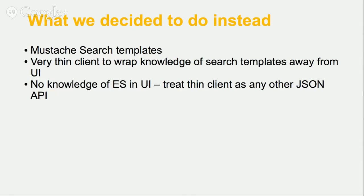What we decided to do instead was use Elasticsearch's search templates feature, which is quite new — it got introduced in 1.2 I think. Around that we would just write a very thin client so that the UI didn't have to be tied to Elasticsearch anymore. It just had to use the service we'd written as an independent JSON API, like anything else.